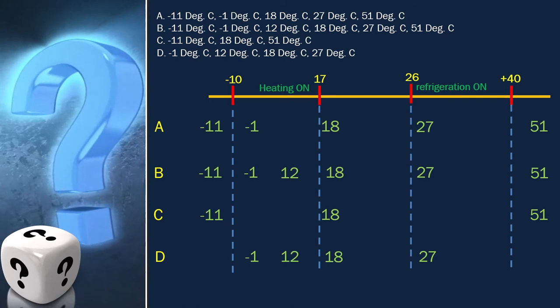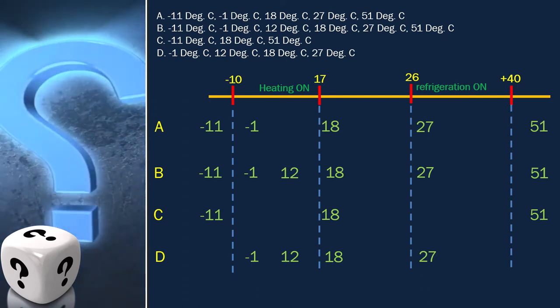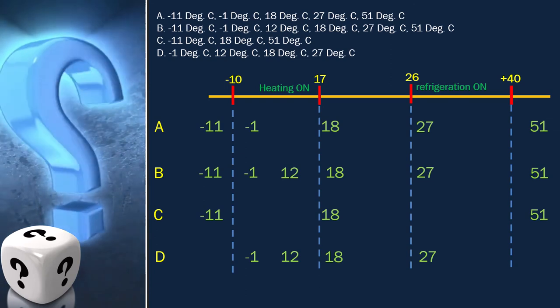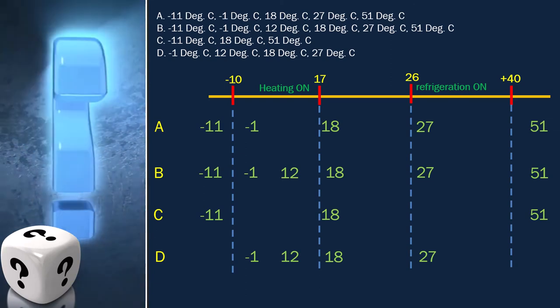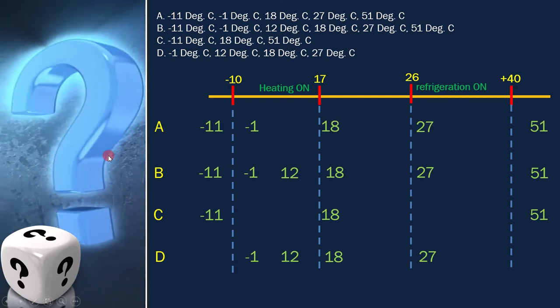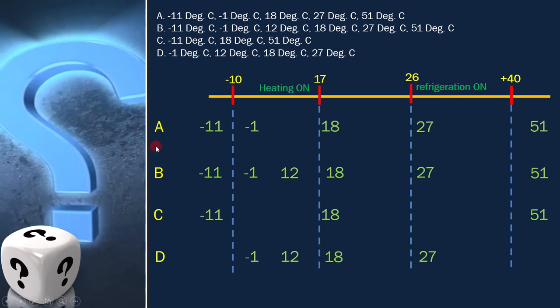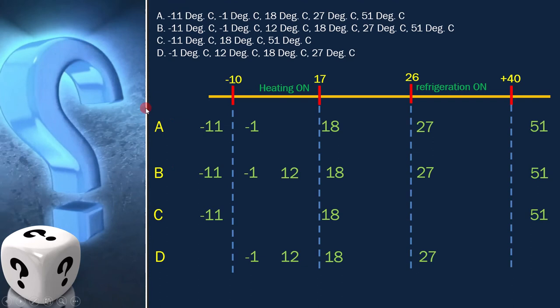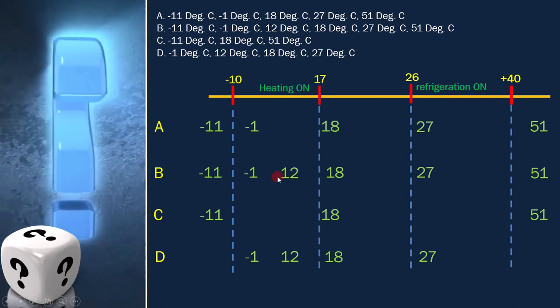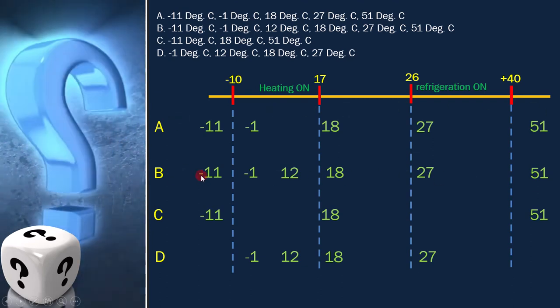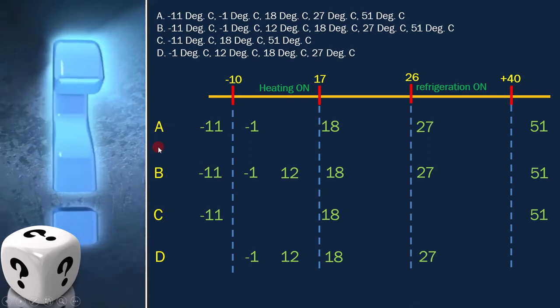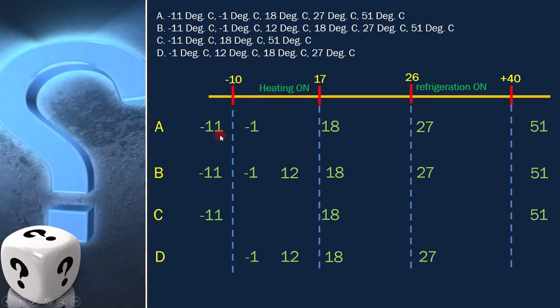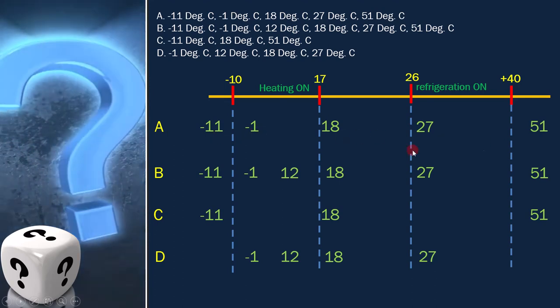As per the question, which of the following sets of values shows that the equivalence partition test design technique has been used correctly? If we analyze all the options, option A and option B are correct, because all the boundaries are covered here. Now we have to select the best answer. And option A is the best answer here, because here we are achieving our goal with minimum test cases.